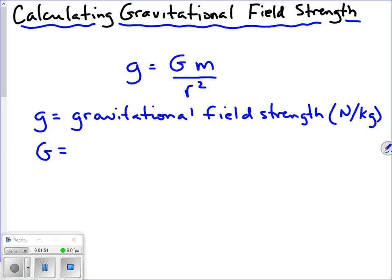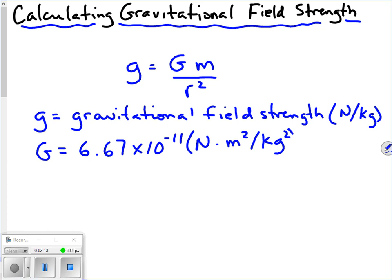Big G is the universal gravitational constant, as discovered by Newton. That value is 6.67 times 10 to the negative 11, with units of newton times meter squared per kilogram squared. The units are essentially there to make the equation work — a constant is a number that makes an equation work, and that's what Newton discovered the value would have to be for these formulas to work.